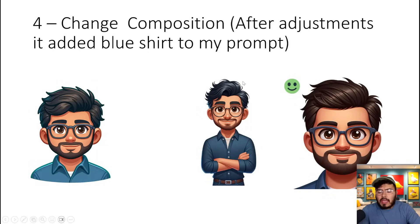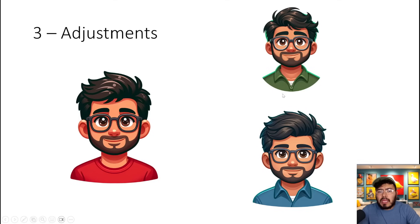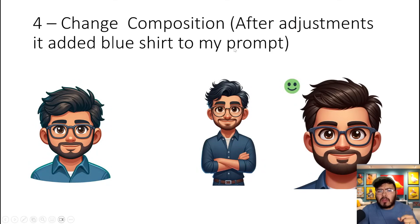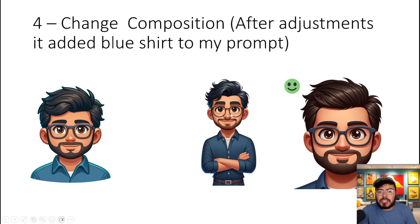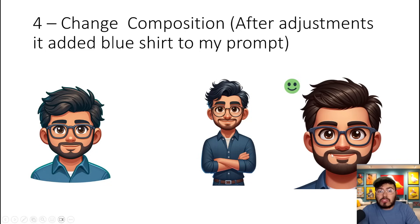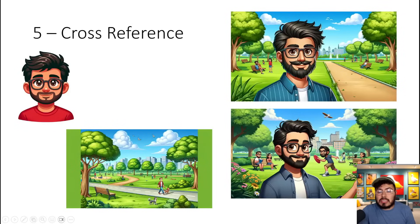Now for change compositions - one thing I did notice is that after I make the adjustments, it also applied those adjustments to future prompts. So now my original image is a blue shirt figure. When I changed the composition, I looked for more of a full-body shot, and that's right here. We can still see that character consistency. I also asked for a close-up shot - so we can change the composition of the image itself.